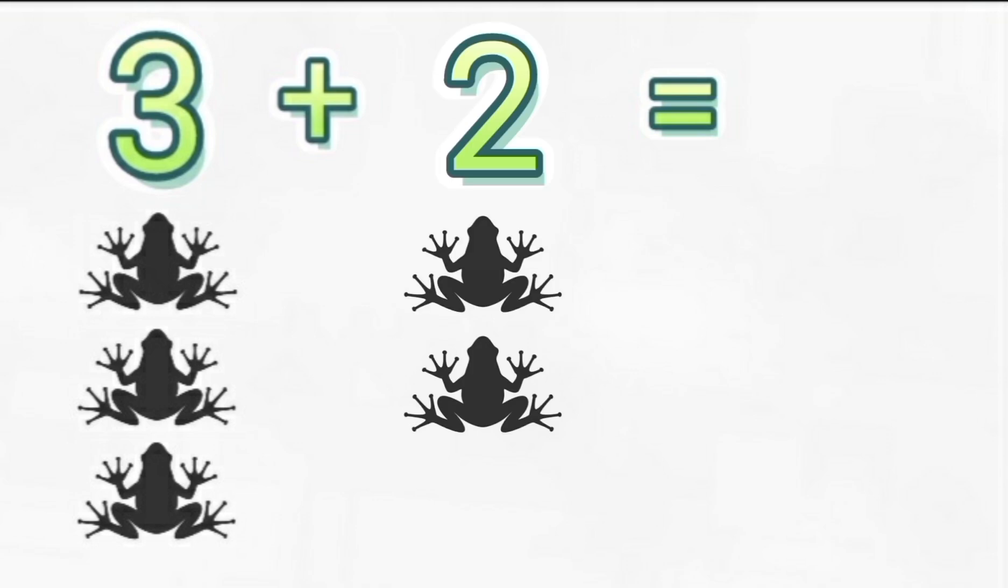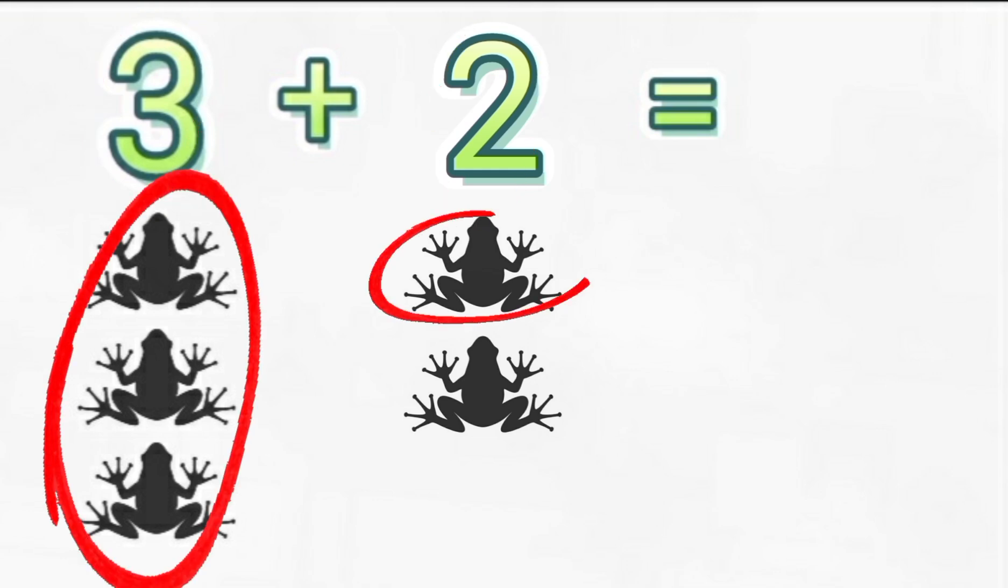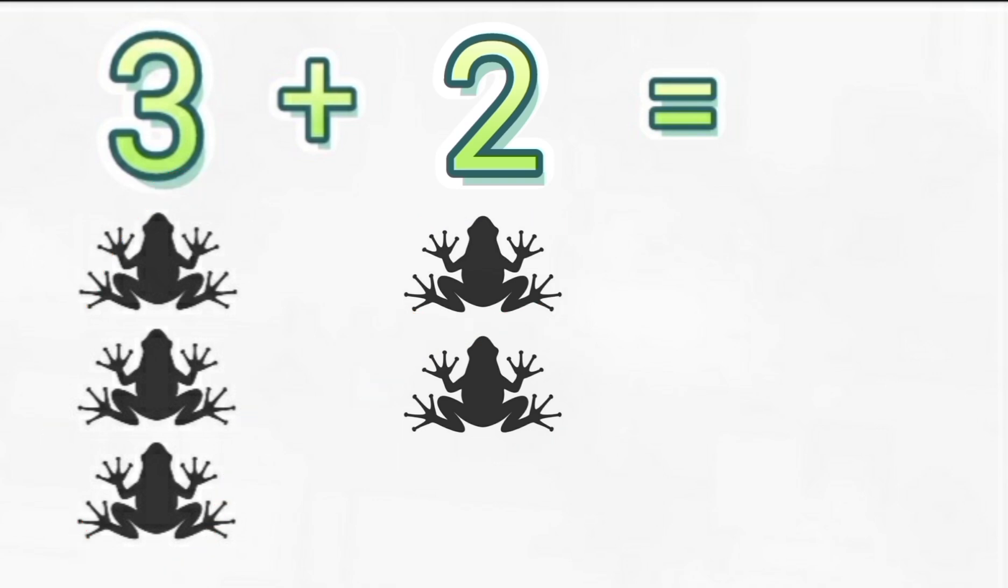So our first number was three, and our second number is two. So in order to get the answer to our addition problem, we add the first number and the second number together. So let's start with three and then add two more. Three. Four. Five. The answer is five.